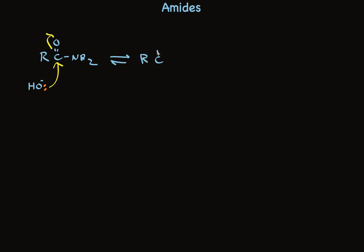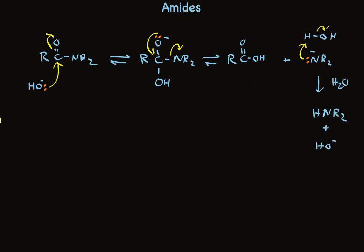And in the second step, the pi bond is reformed. Nitrogen with the negative charge leaves. And because a negatively charged nitrogen is very basic, rapidly a proton is lost from water. We regenerate hydroxide, making the amine. And at the same time, because this is in base, we rapidly deprotonate the acid to make carboxylate anion.